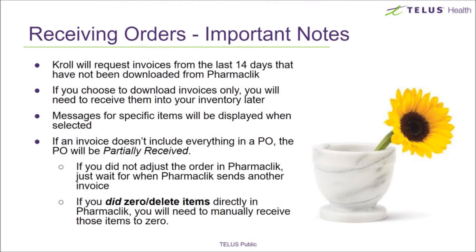Important things to remember. The first time you use this method, invoices you have not downloaded from the past 14 days will be brought over into CROWL. Downloading invoices only will not update your inventory — be sure to flag on the Receive Invoice option as well. If not everything from your purchase order is included in the invoices, the status of the order will show as partially received. When you sent your order, if you didn't make any changes in Pharmaclick, Pharmaclick should eventually include the items in a future invoice. However, if you deleted items from your order in Pharmaclick, you will need to manually zero receive those items to tell CROWL to stop looking for them in invoices.